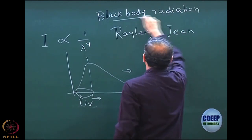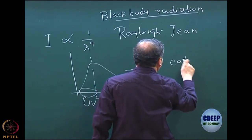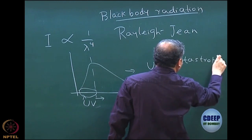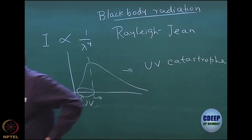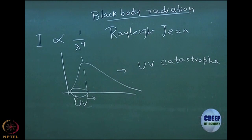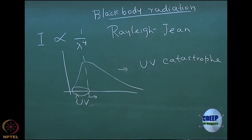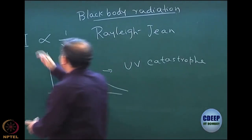This low-wavelength region — the ultraviolet region — could not be explained by classical mechanics because classical mechanics fails there. This is why it is called the ultraviolet catastrophe. This was one of the experiments which signaled the failure of classical mechanics in the quantum regime.